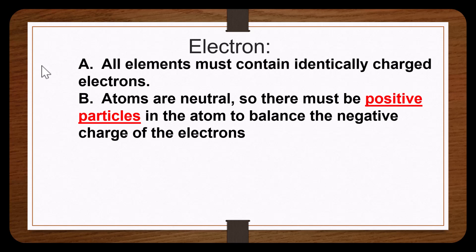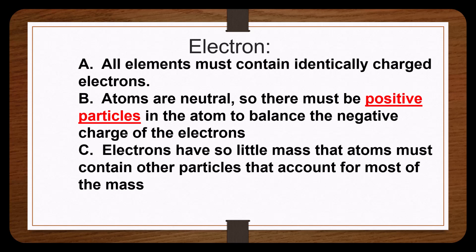Atoms are neutral, so there must be a positive particle in the atom to balance out the negative charge from the electron. Electrons have so little mass that the atom must contain other particles to account for most of the mass.